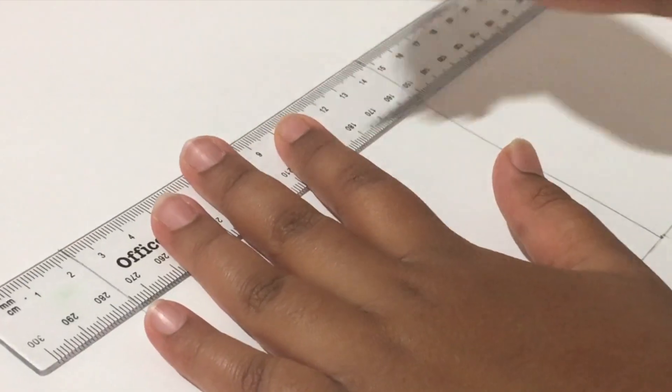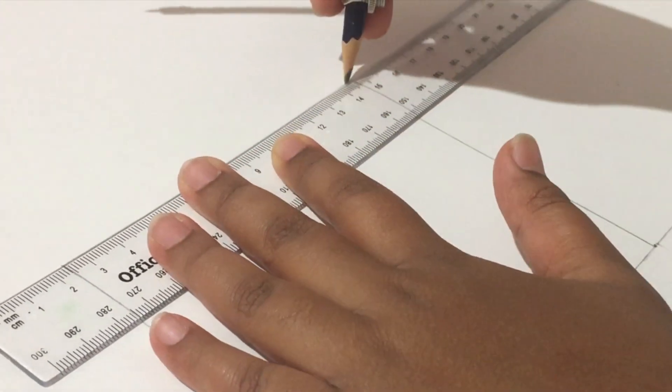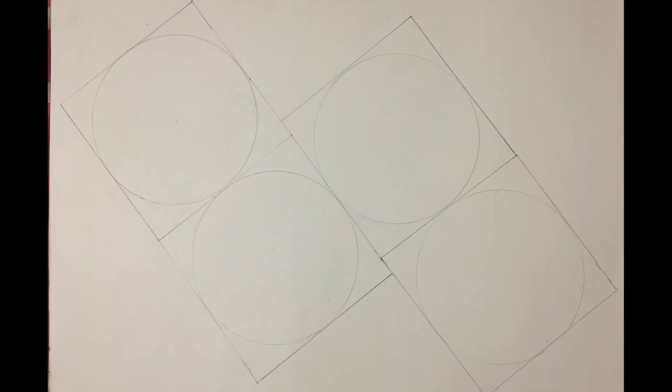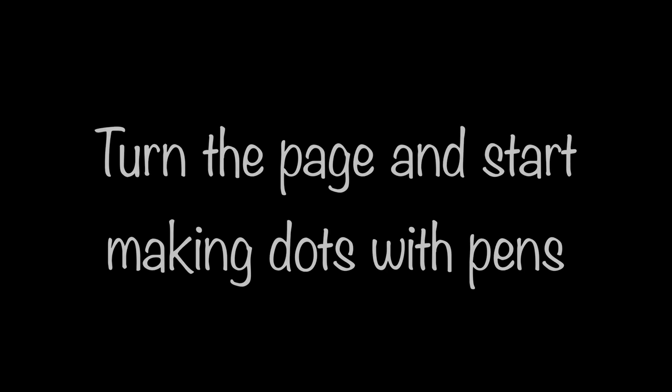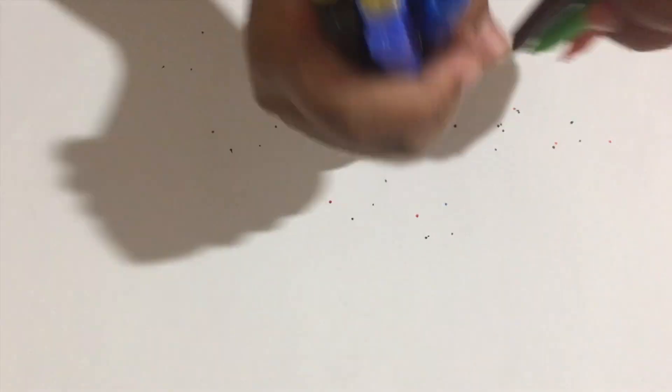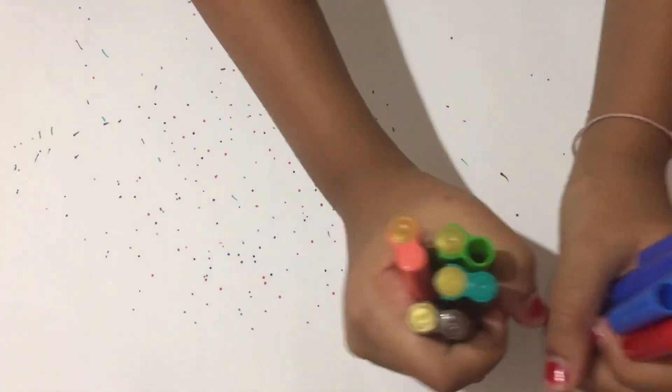Then we are going to draw a circle with a radius of 6 centimeters inside the squares. This is how it looks. Turn the page and start making dots with pens. If you like, you can close your eyes so it will be more random.